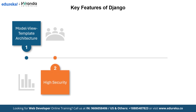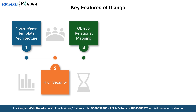High security is built into Django — it protects your app from common attacks like SQL injection and cross-site scripting, so you don't have to worry about vulnerabilities. Next is Object-Relational Mapping. Django's ORM connects your app to the database seamlessly, where you can write Python code instead of SQL queries to fetch, update or store data, saving time and effort.